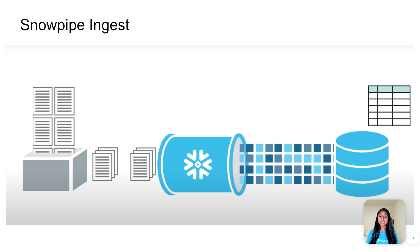Snowpipe eliminates the need for a virtual data warehouse, and instead uses its internal compute resources to continuously load the data files as they are staged. So you are only charged for the actual data loaded.